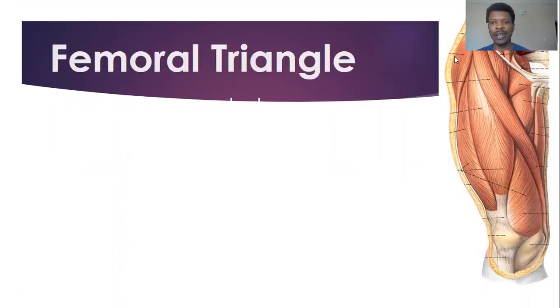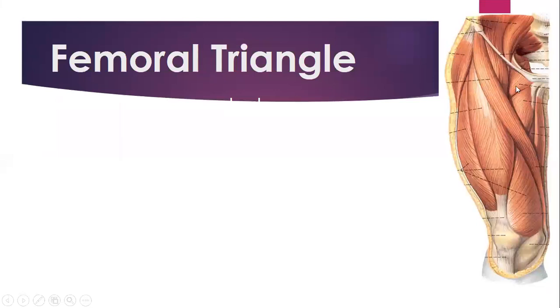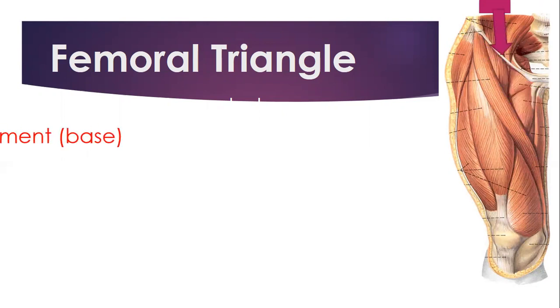The femoral triangle is a triangular depression found on the upper medial thigh. It's located just here — that's the triangle that makes up the femoral triangle, the triangle that is formed in the femoral region.